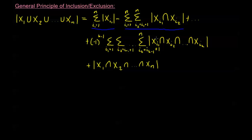An arbitrary term in the sum covers all possible intersections of k different sets, for k going from one, two, three, all the way up to n. The final term — since there is only one way to intersect all n sets — is a single term involving the intersection of all the sets, with a sign of negative one to the power of n minus one, depending on whether n is even or odd.